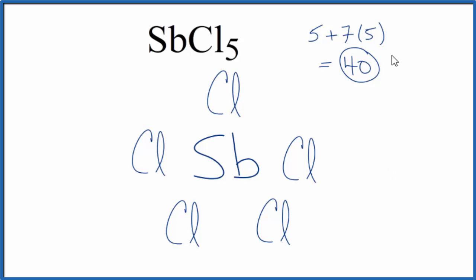We have 40 total valence electrons for the SbCl5 Lewis structure. We'll put 2 between atoms. That'll form the chemical bond. And we note right away that antimony has 10 valence electrons around it, but that's okay. Antimony can have an expanded octet, so we can have more than 8 valence electrons.